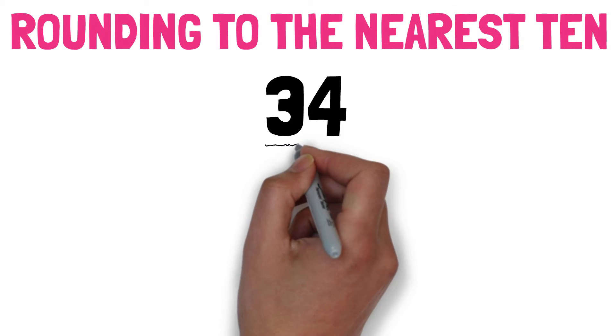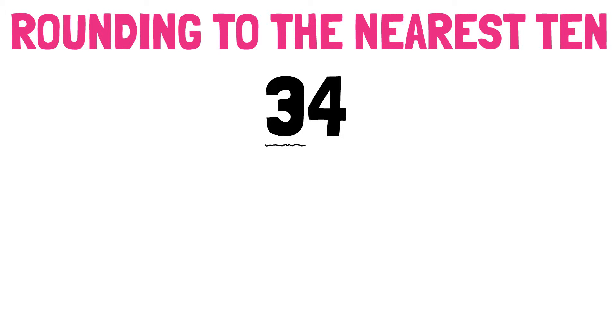First step, we know that 34 is between two different tens. Take the current tens value, 30, and place it as the start. The next tens value is 40.